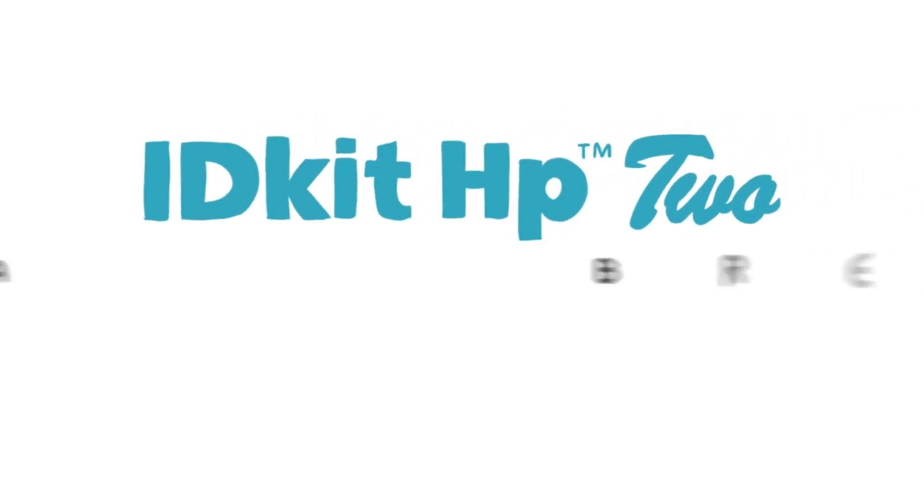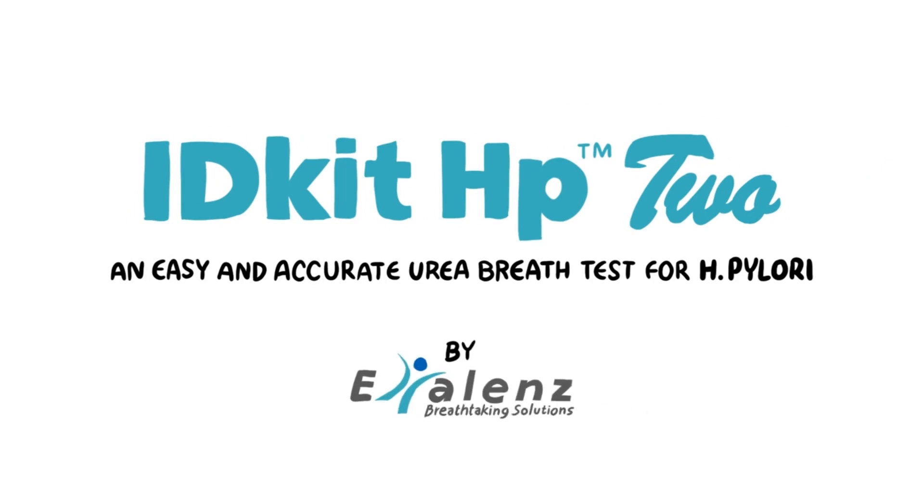The IDKIT HP2 is an accurate urea breath test for detecting H. pylori. Here's how to administer the test.